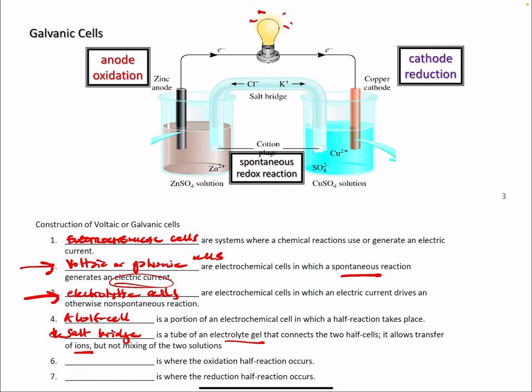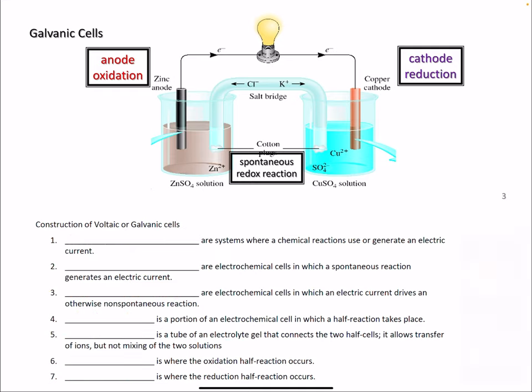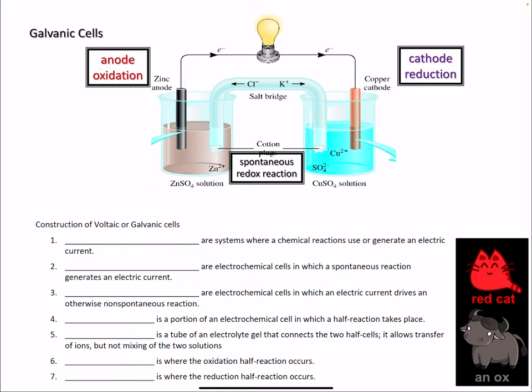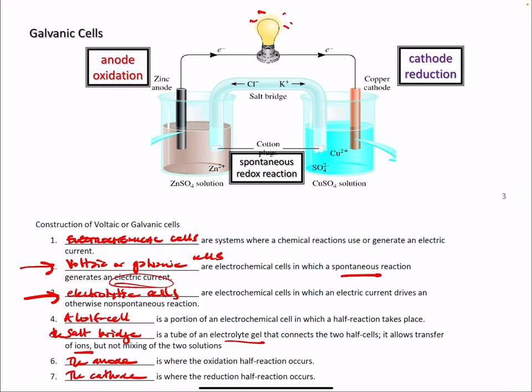Oxidation occurs at the anode in a galvanic cell, and the cathode is where reduction, the reduction half reaction occurs. And so you can say, a red cat, an ox and a red cat. So reduction occurs at the cathode, oxidation occurs at the anode.